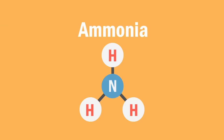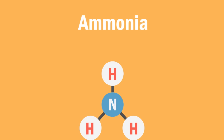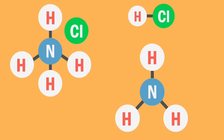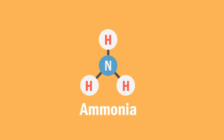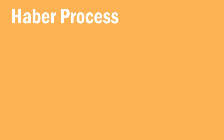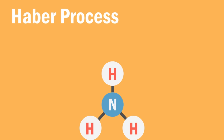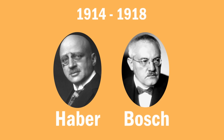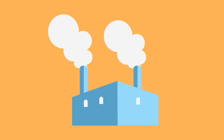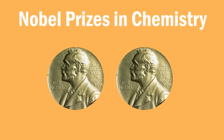You have likely produced ammonia in the laboratory, from the thermal decomposition of ammonium chloride or from the reaction of ammonium and hydroxide ions. Have you ever wondered how ammonia is produced on an industrial scale? In this lesson, we will learn about the Haber process to produce ammonia, developed during World War I by Fritz Haber and Karl Bosch. For their efforts and contributions to developing large-scale industrial processes, they were awarded with Nobel Prizes in Chemistry.